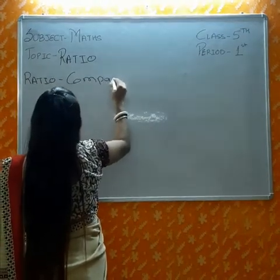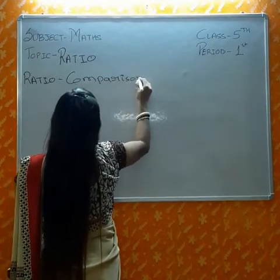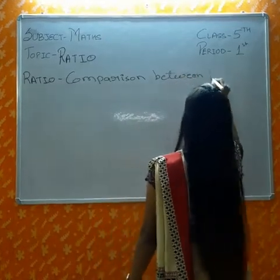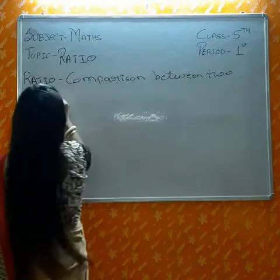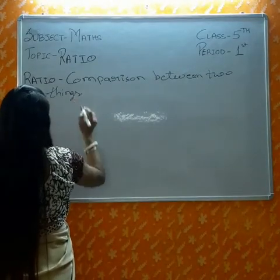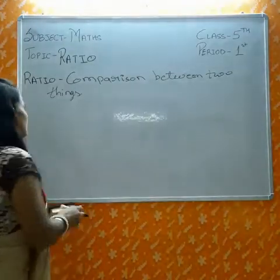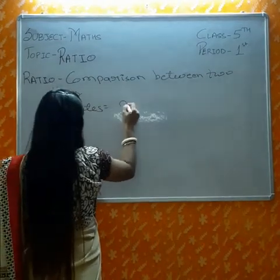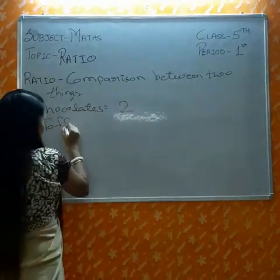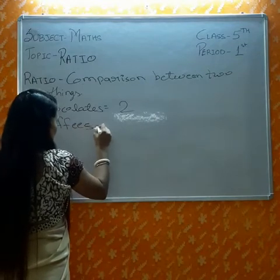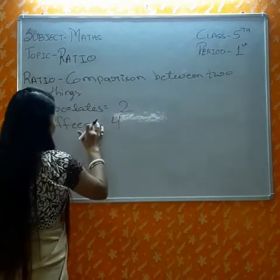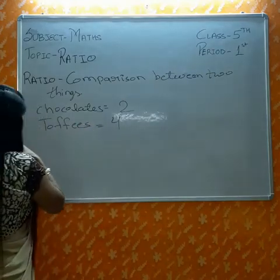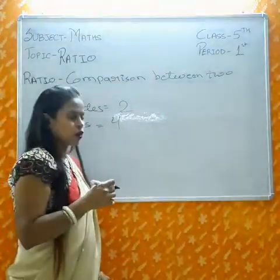Ratio means comparison between two things. Comparison between two things is called ratio. I am having two chocolates here, and I am having four toffees. So we have to find the ratio between toffees and chocolates.